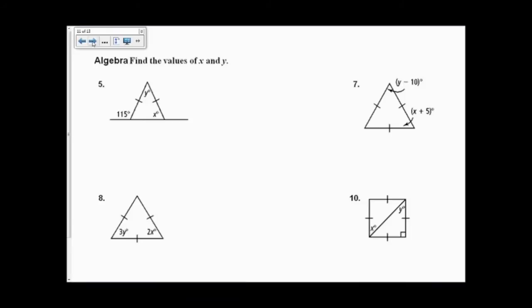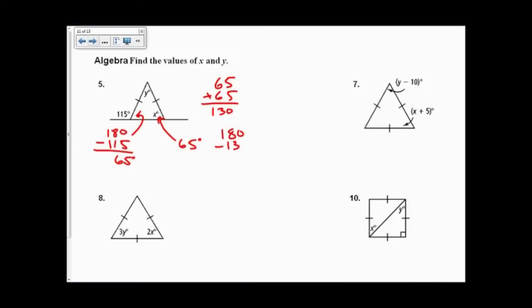Find the values of X and Y in problem 5. First, find the angle that forms a linear pair with the 115-degree angle: 180 minus 115 equals 65 degrees. Because this is an isosceles triangle, the base angles are congruent, so X is also 65 degrees. By the triangle angle sum theorem, 65 plus 65 equals 130, and 180 minus 130 equals 50, so angle Y must be 50 degrees.